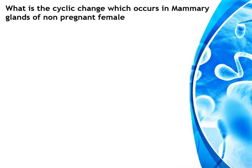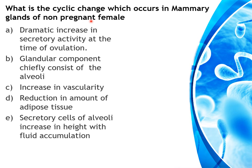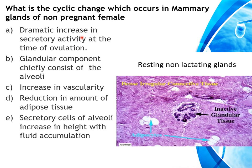What are the cyclic changes in the mammary gland of the non-pregnant female? Dramatic increase in secretory activity at ovulation — no, that occurs in pregnancy. Glandular component chiefly consists of alveoli — no, it chiefly consists of ducts. Increase in vascularity — no, that occurs in pregnancy. Reduction in adipose tissue — not true, large amounts of adipose tissue are present. Secretory cells of alveoli increase in height with fluid accumulation — correct; in the secretory phase the cell height increases with slight fluid accumulation in the duct lumen. The answer is option E.